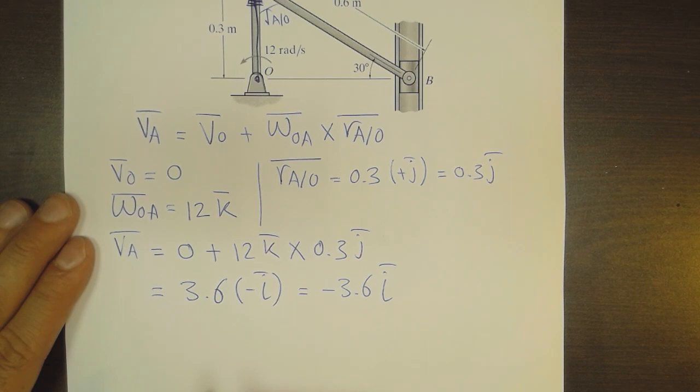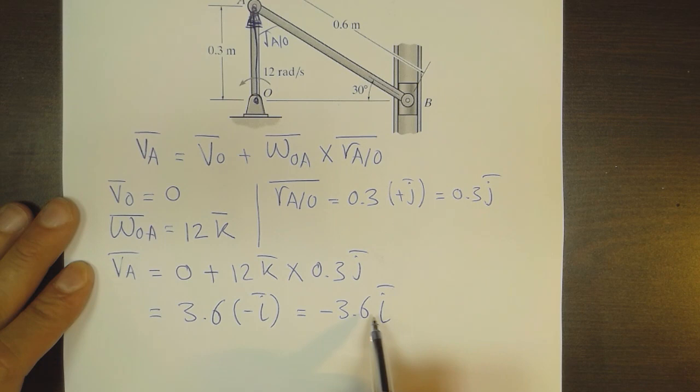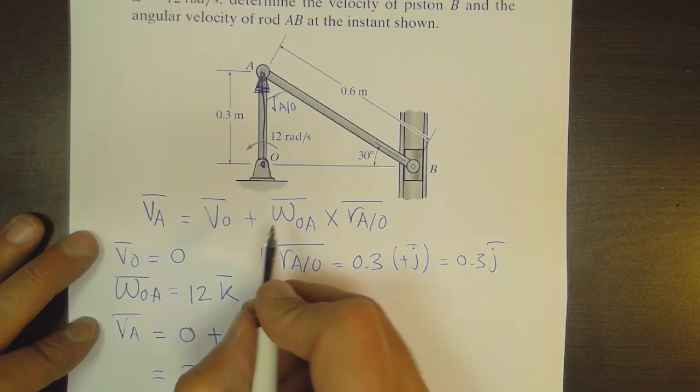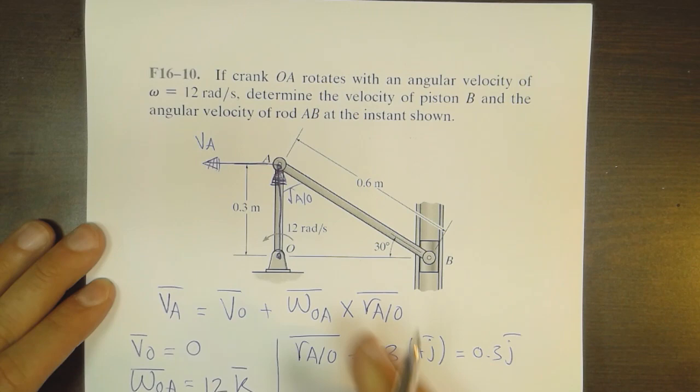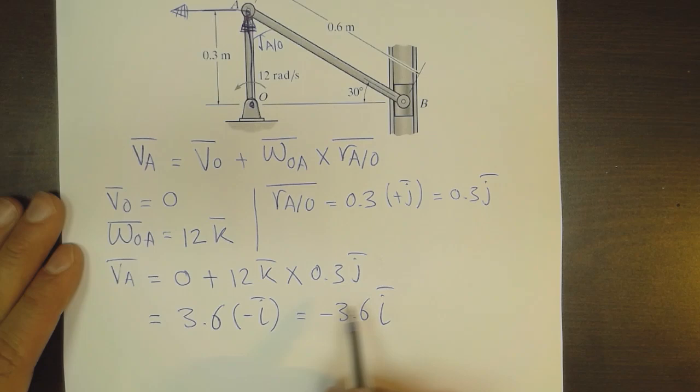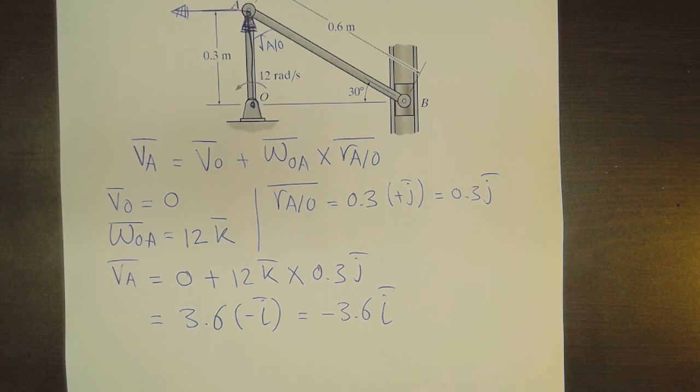So the velocity of point A in vector form is minus 3.6i, meaning it is going in the negative x direction at a rate of 3.6 meters per second. We can represent V_A as going to the left.